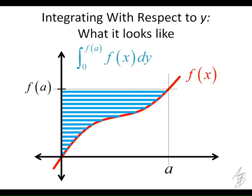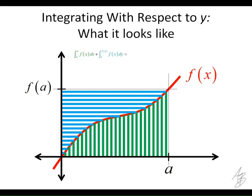Now, one interesting fact, and this is partly where the integration by parts formula comes from, if we add up those two areas, the integral from zero to a of f(x) with respect to x, and the integral from zero to f(a) of f(x) with respect to y, what is that area right there? It's just a rectangle, so it's f(a) times a.